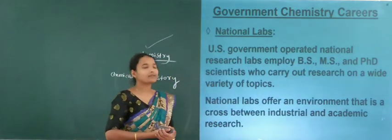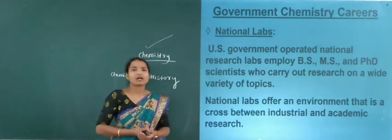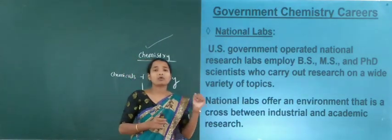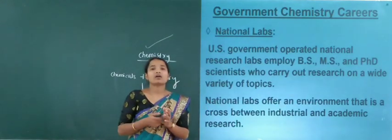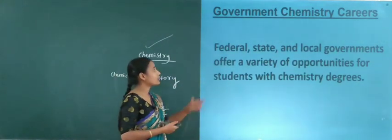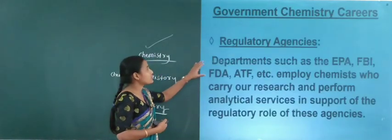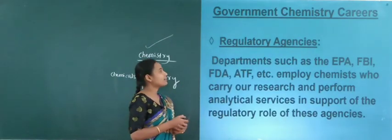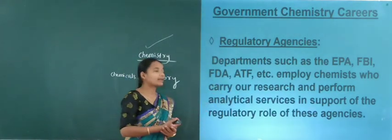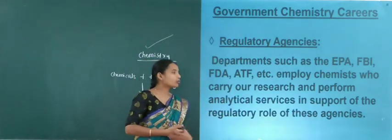You have a variety of opportunities with BSc and MSc in different branches of chemistry, including competitive examinations related to chemistry. Federal, state, and local governments offer a variety of opportunities for students with chemistry degrees. Regulatory agencies — departments such as EPA, VA, FBI, FDA, ATF, etc. — employ chemists who carry out research and perform analytical services in support of the regulatory role of these agencies.